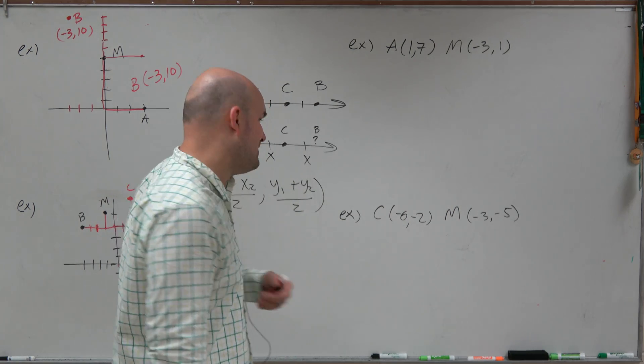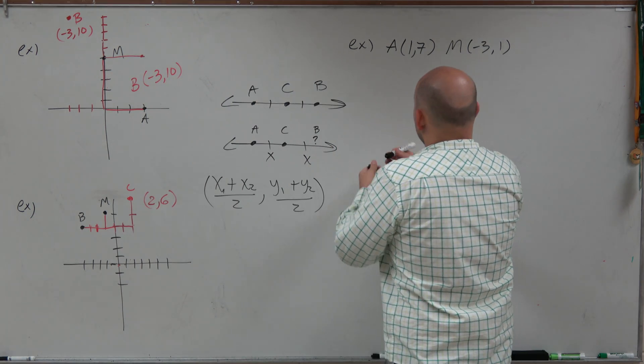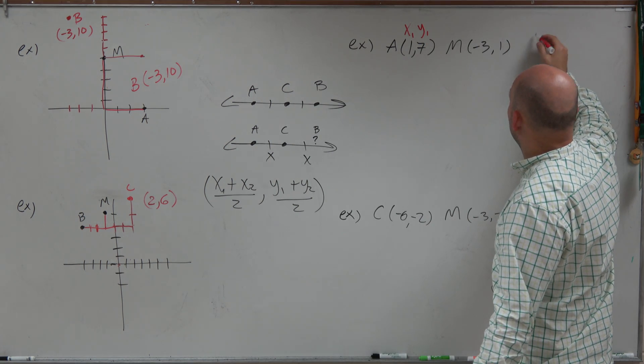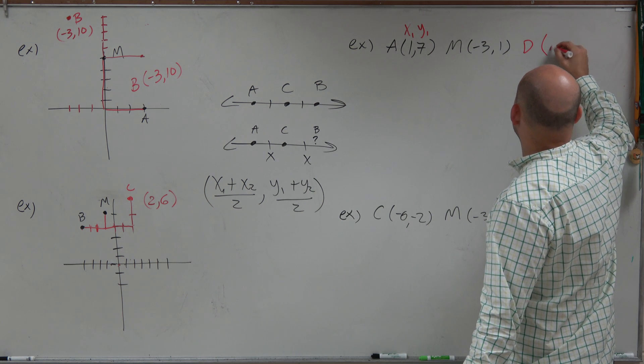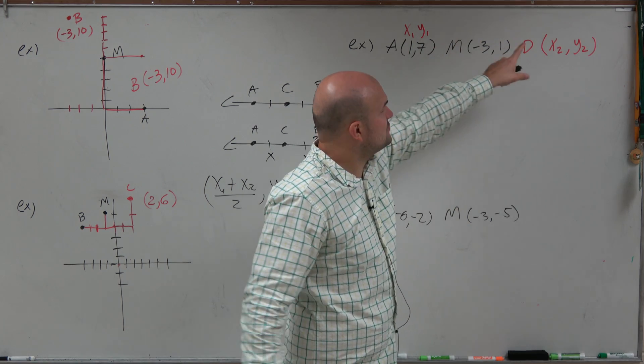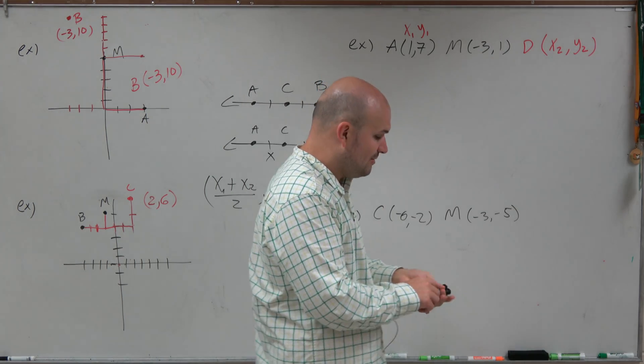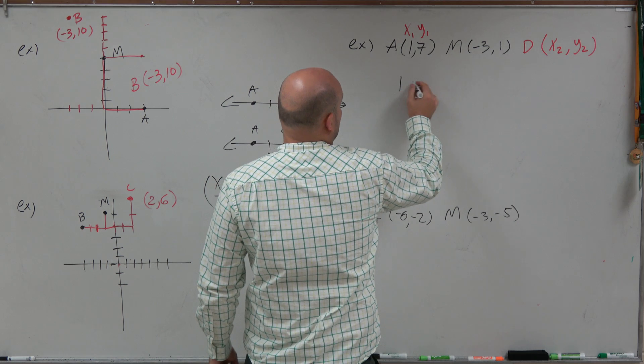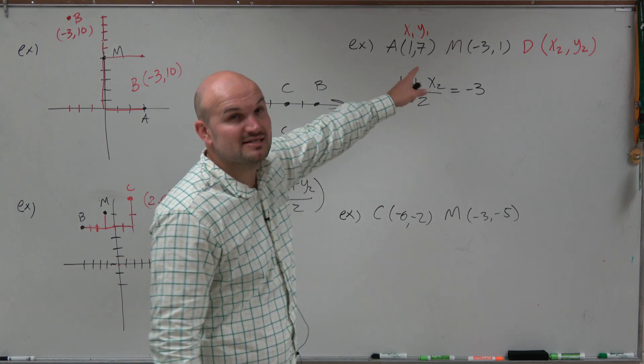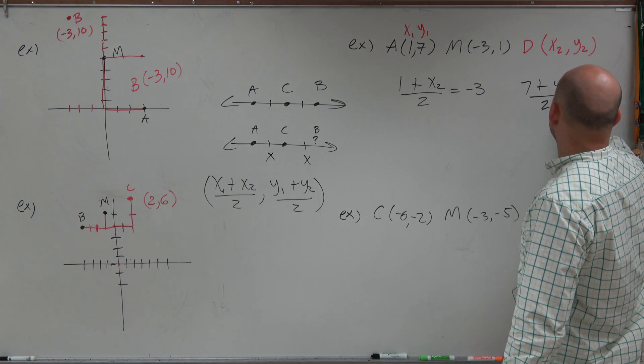We can use this midpoint formula to help us solve for our other point. If here is x1 and y1, our other endpoint, let's call this D. I don't know what D is, but I know I need to have an x2 and a y2. Because I know that x1 plus x2 divided by 2 equals negative 3. So I can create an equation. I could say 1 plus x2 divided by 2 equals negative 3. And then I can do the same thing on the y coordinate. I could say 7 plus y2 divided by 2 equals 1.